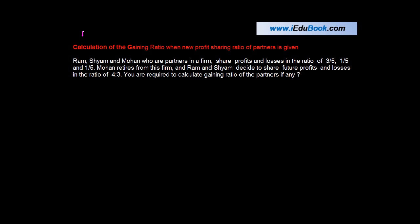This case deals with retirement of a partner - calculation of the gaining ratio when the new profit sharing ratio of partners is given. In this case, let's say there are three partners: Ram, Sham, and Mohan.